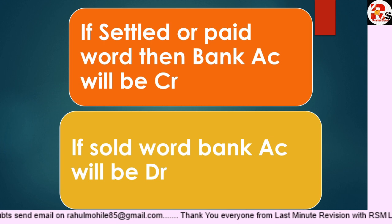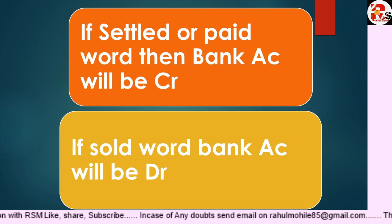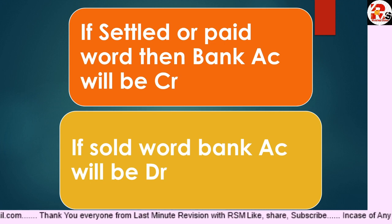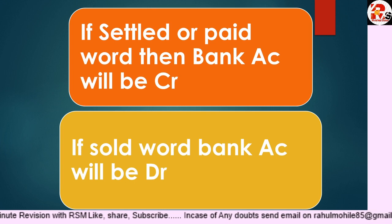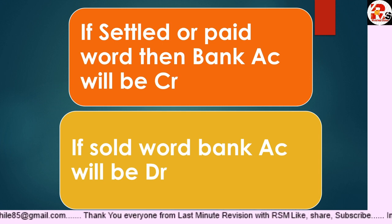For example: secured loan is paid, expenses paid, reconstruction expenses paid — whenever the word 'settled' or 'paid' is given in the question or adjustment, Bank Account will always be credited. The reason is that whenever we pay anything, cash goes out from us, and by the Real Account rule — 'credit what goes out' — since cash is going out, we credit Bank Account. So remember: if 'settled' or 'paid' is given, Bank Account is always credited.